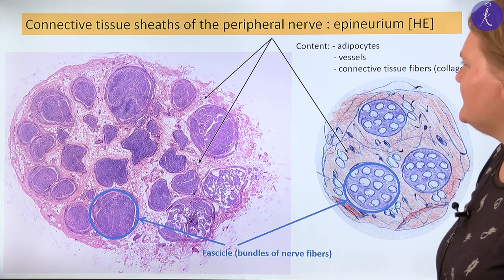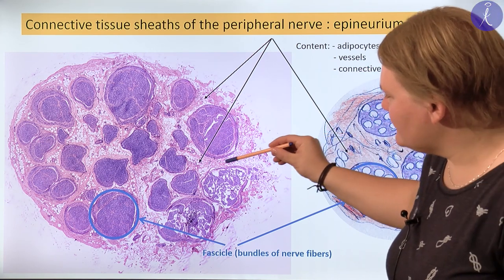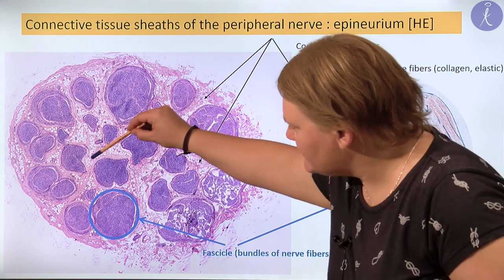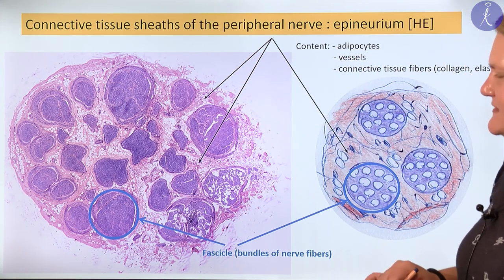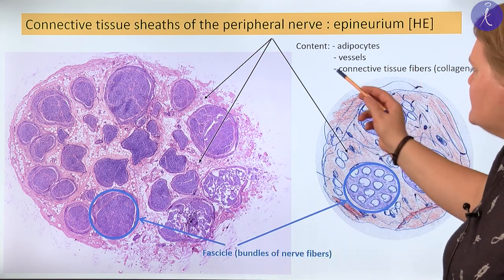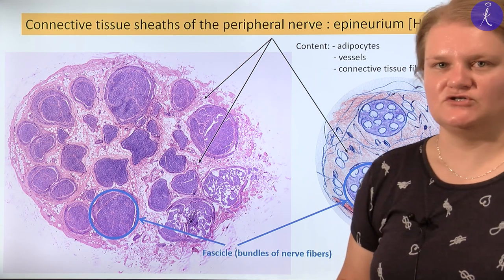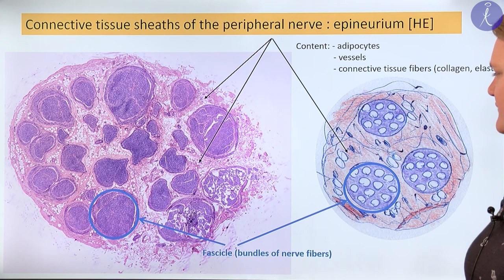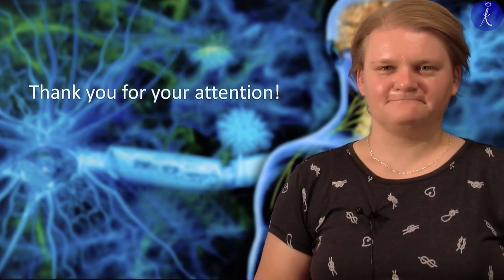The last type of connective tissue sheet is the epineurium, which covers all fascicles in the nerve cross-section — this is the whitish-yellowish connective tissue part you can see here. It contains many adipocytes for mechanical protection of the fascicles and nerve fibers, many vessels, connective tissue cells, and connective tissue fibers — mainly collagen and elastic fibers. And that is what I wanted to tell you today — thank you for your attention.